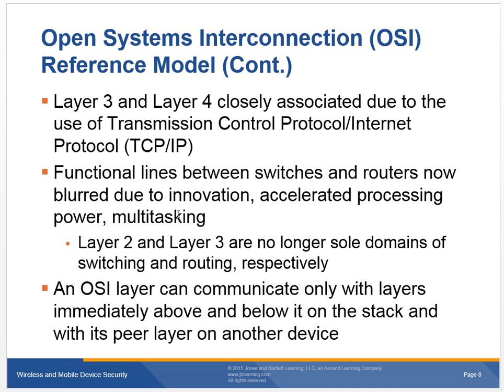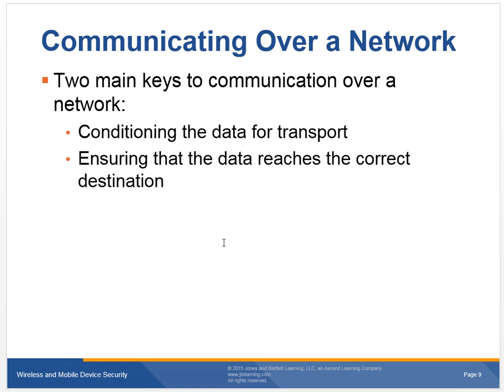TCP/IP is what's called a protocol suite — it actually makes up a whole bunch of stuff: obviously TCP, UDP, but it also includes IP, HTTP, ARP, DNS, DHCP, and all kinds of different protocols. The function lines between switches and routers are now blurred. In the past, we had a lot of hubs and some routers; now we have switches that can actually perform routing as well. Layer 2 and 3 are no longer the sole domains of switches and routers — they can perform each other's functionality.